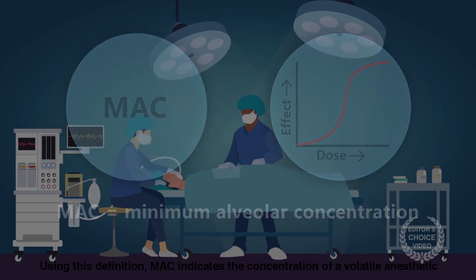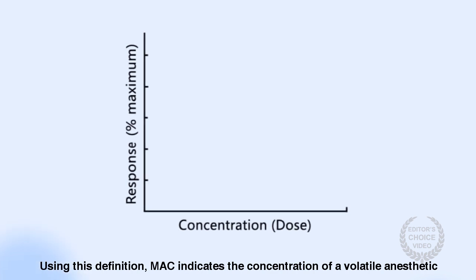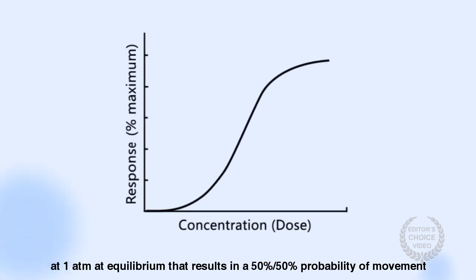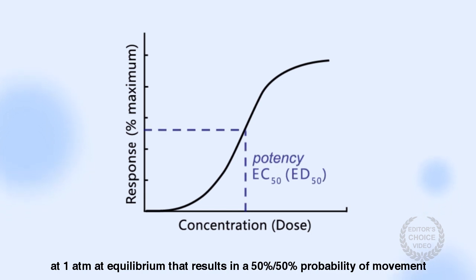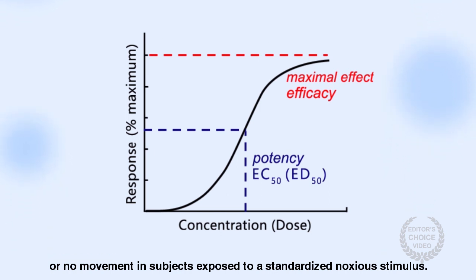Using this definition, MAC indicates the concentration of a volatile anesthetic at one ATM at equilibrium that results in a 50-50 probability of movement or no movement in subjects exposed to a standardized noxious stimulus.